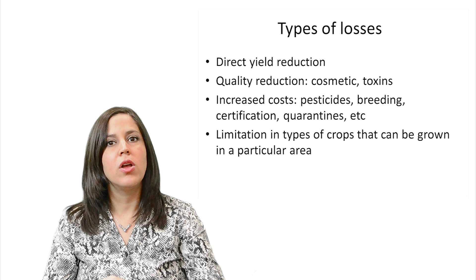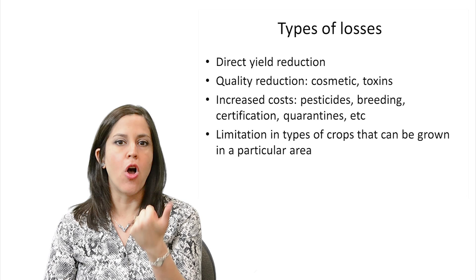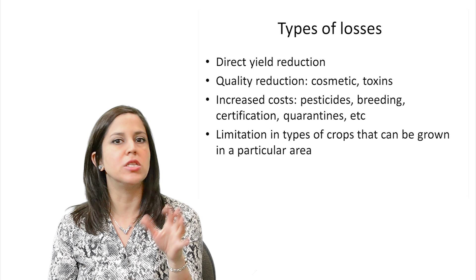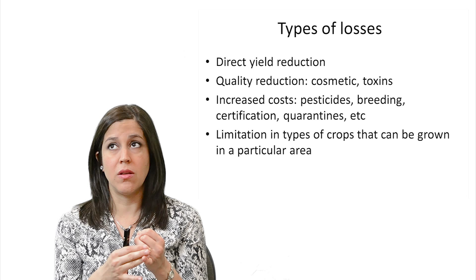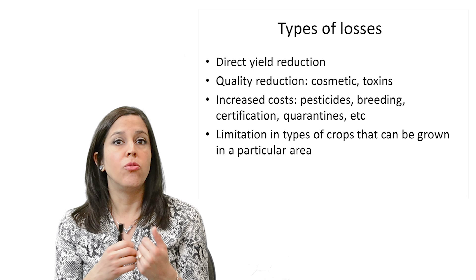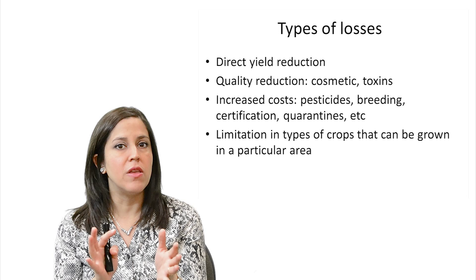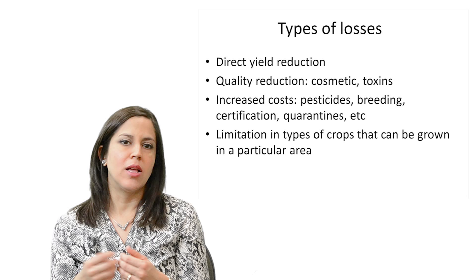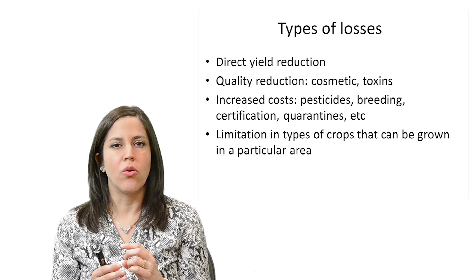Plant diseases also add increased costs for pesticides, and sometimes breeding programs or hybrids used may cost more for a specific disease in an area. Certification programs — some crops like citrus and potatoes require certified seed or certified budwood to be planted. Quarantines, depending on if a new disease comes in, also add to the increased costs of production, as well as limiting the types of crops that can be grown in a particular area.